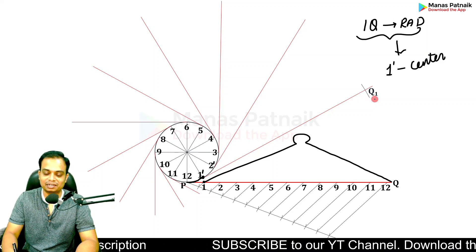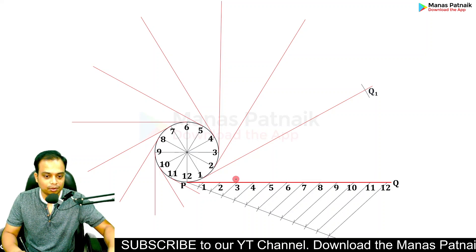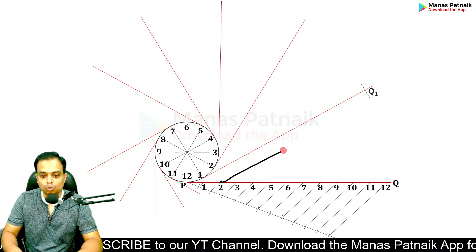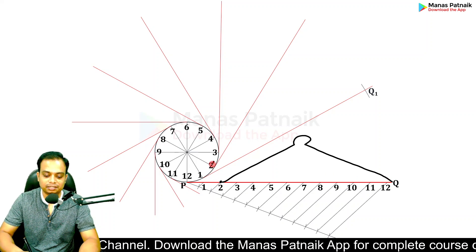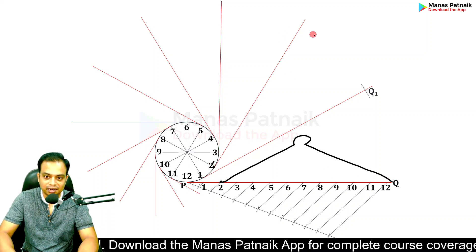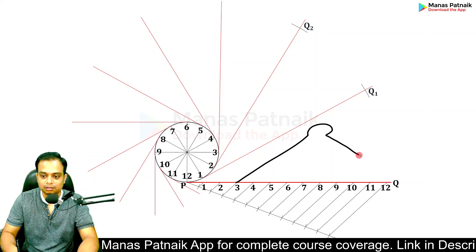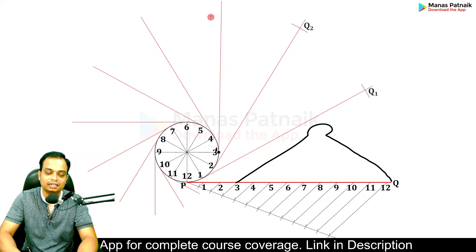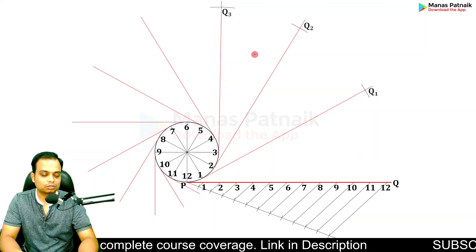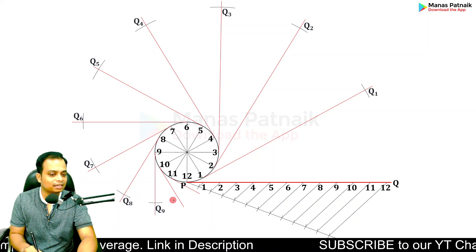Similarly, with two Q as the radius and with two dash as the center, cut an arc again. This is Q2. Similarly, with three Q as the radius and with three dash as the center, cut an arc. This is going to give rise to Q3. Similarly you can obtain points Q4, Q5, Q6, Q7, Q8, Q9, Q10.